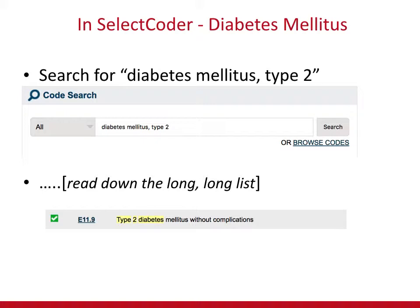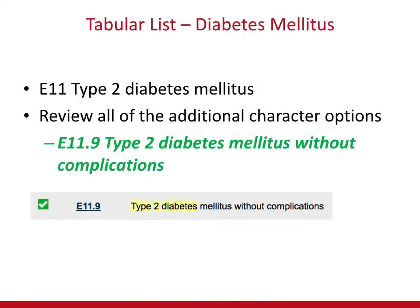Whenever you're not sure if something is a complication, use research like MedlinePlus — a medical dictionary and encyclopedia from the National Library of Medicine — or query the physician, or when you're in class, query your instructor. It's always better to double-check than to guess, because you don't want to bring harm to anybody. When you click on E11.9, you'll see a green check mark to the left of the code in Select Coder — that means you're done. You have a complete and valid code that matches what is documented: type 2 diabetes mellitus without complications.